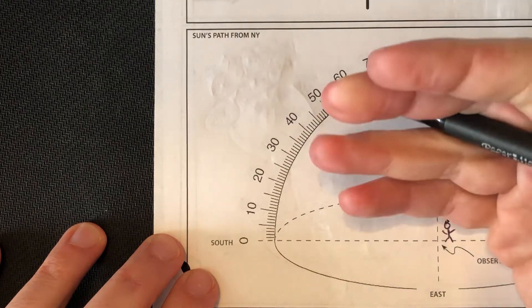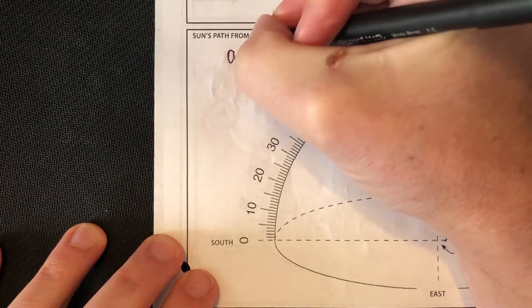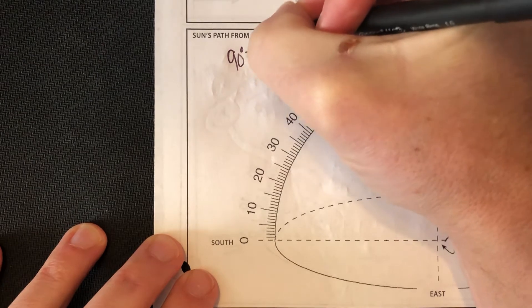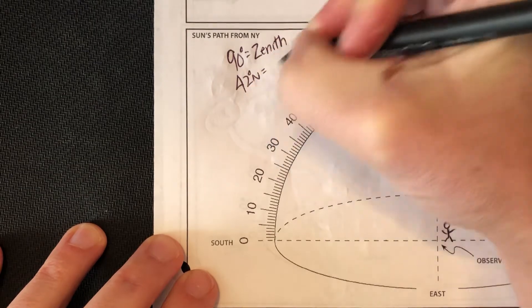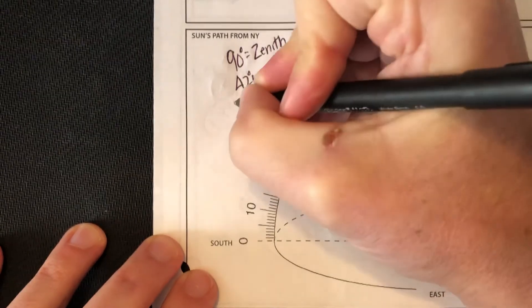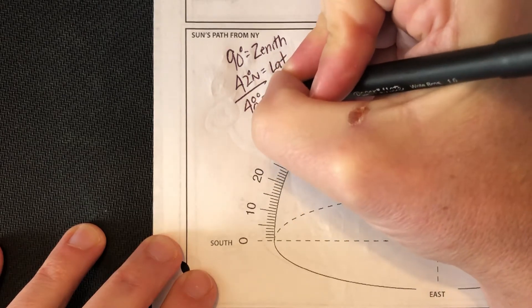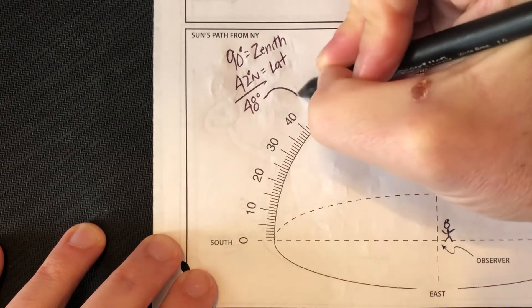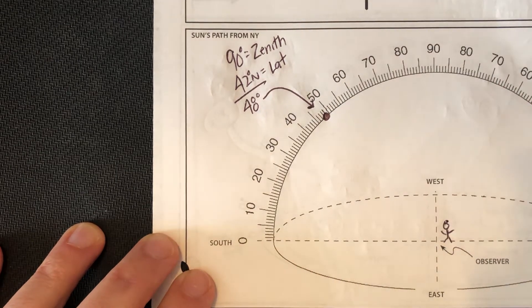Let me show you again how we figure out the altitude of the noon sun in spring and fall. I showed you how to do it in summer, how to do it in winter. Again, 90 degrees is the zenith. 42 degrees is our latitude. If you subtract them, that's 48 degrees. That is going to be the position of the noon sun in spring and in fall.